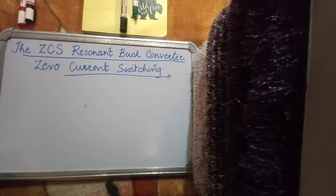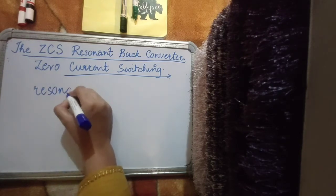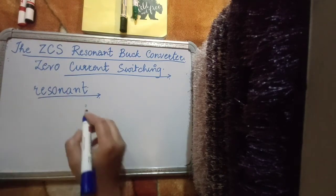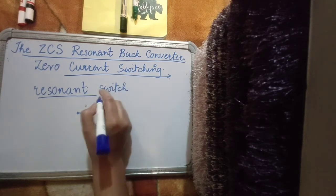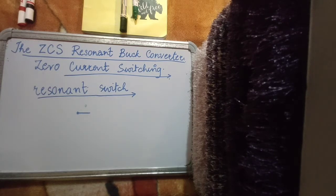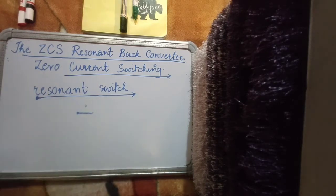Before we move on to the resonant buck converter we need to understand a resonant switch. The term resonant converter is used for quasi-resonance converters where a switch in combination with an LC tank circuit is used. A proper switching scheme plus the concept of LC resonance during some switching interval — that is the concept of quasi-resonance circuits. There is an LC tank that does not resonate always but goes into resonance during a particular interval during switching, and the switching strategy is designed to align with the purpose of using LC.